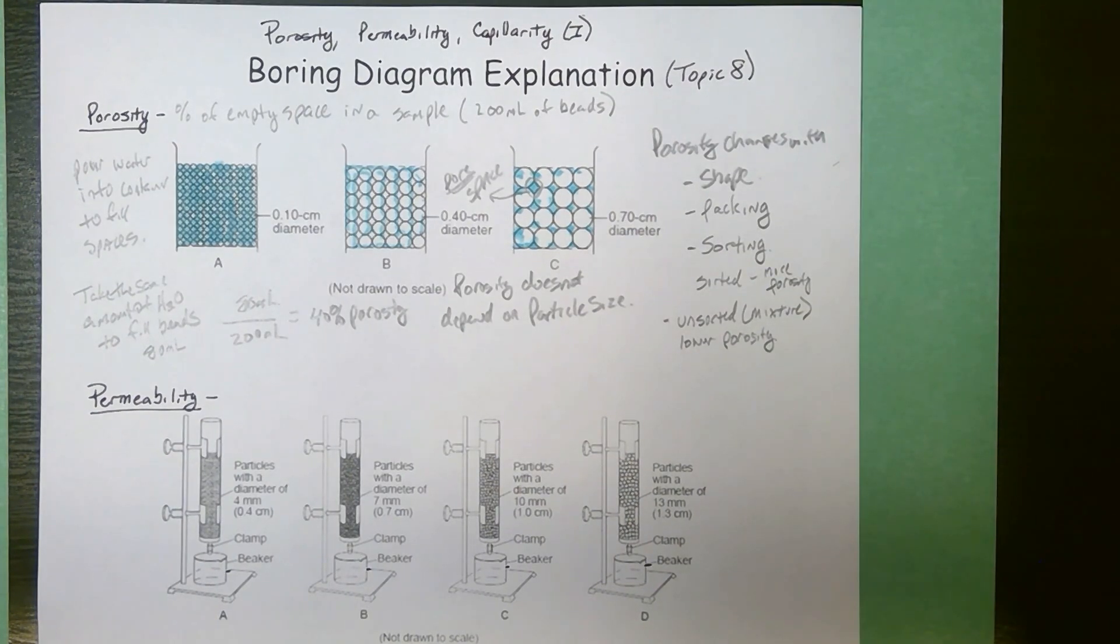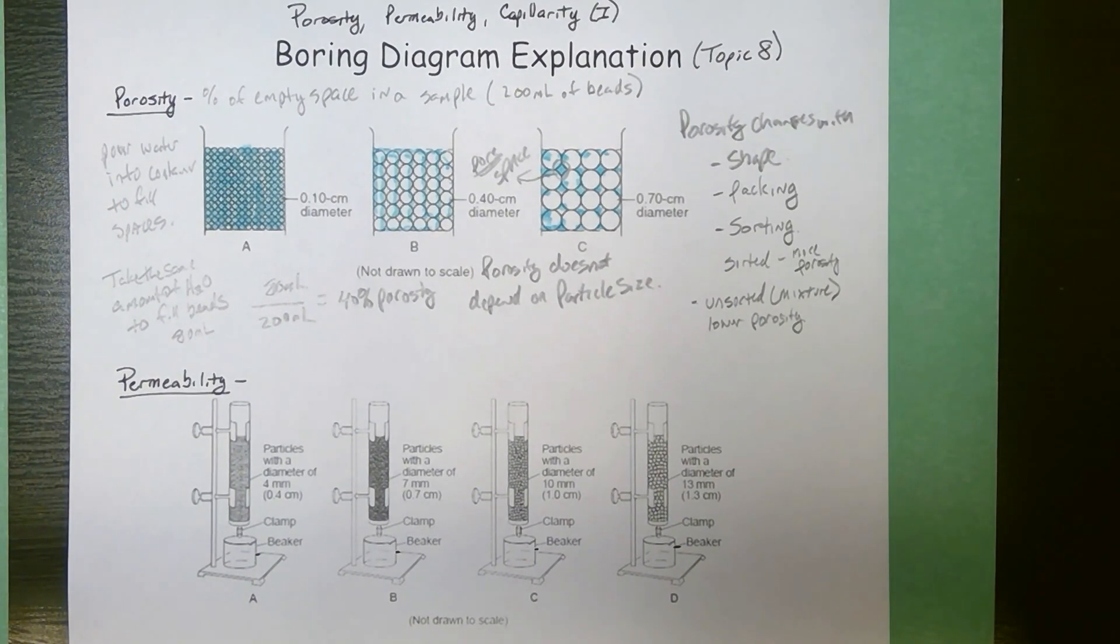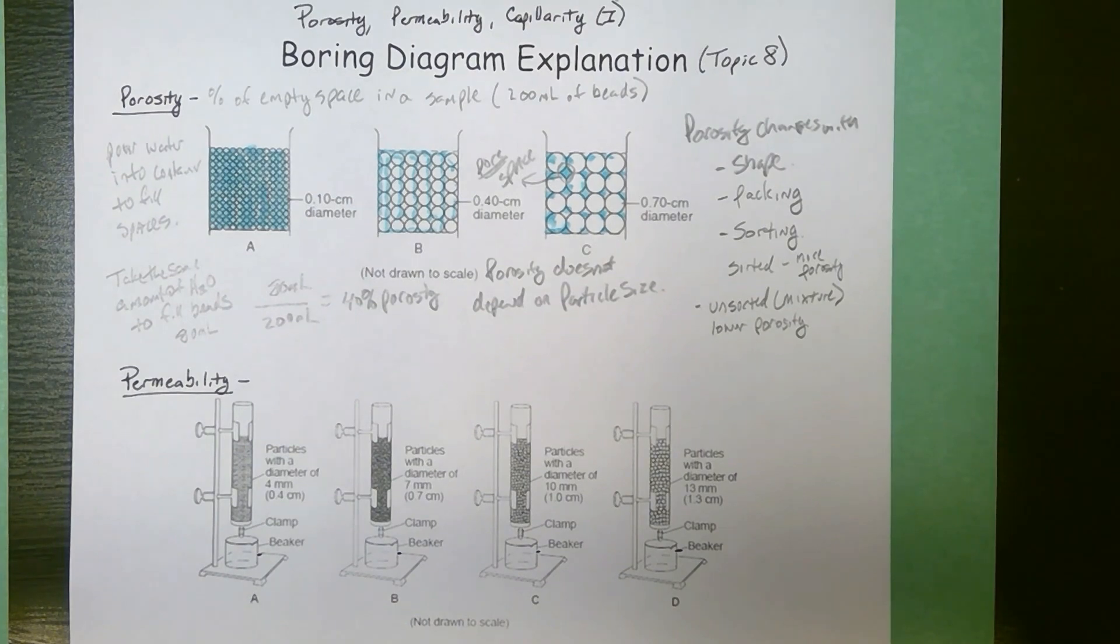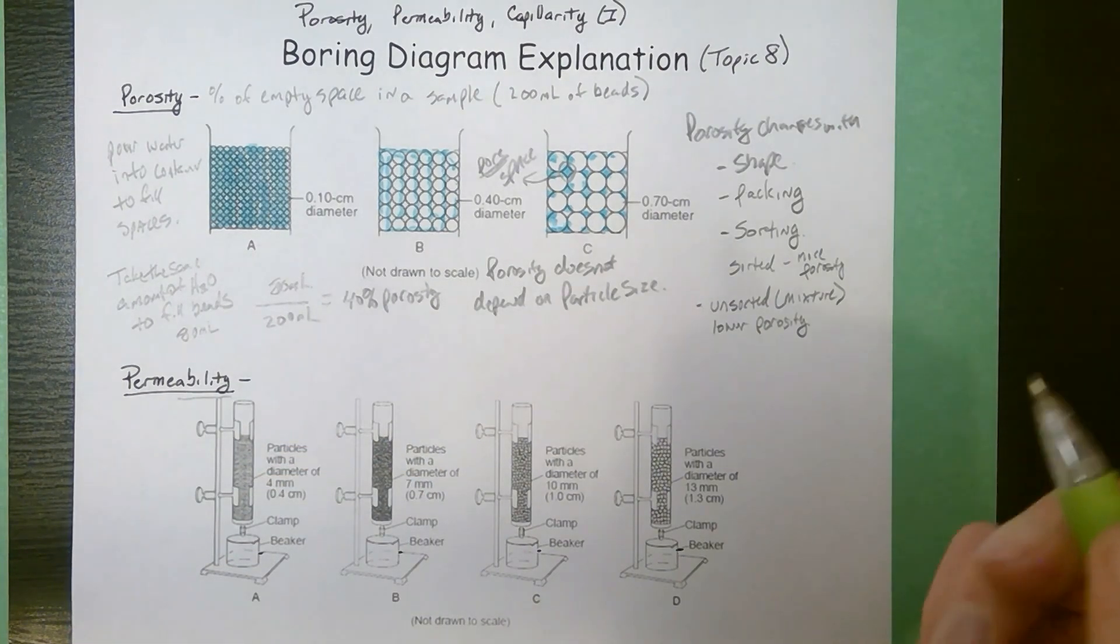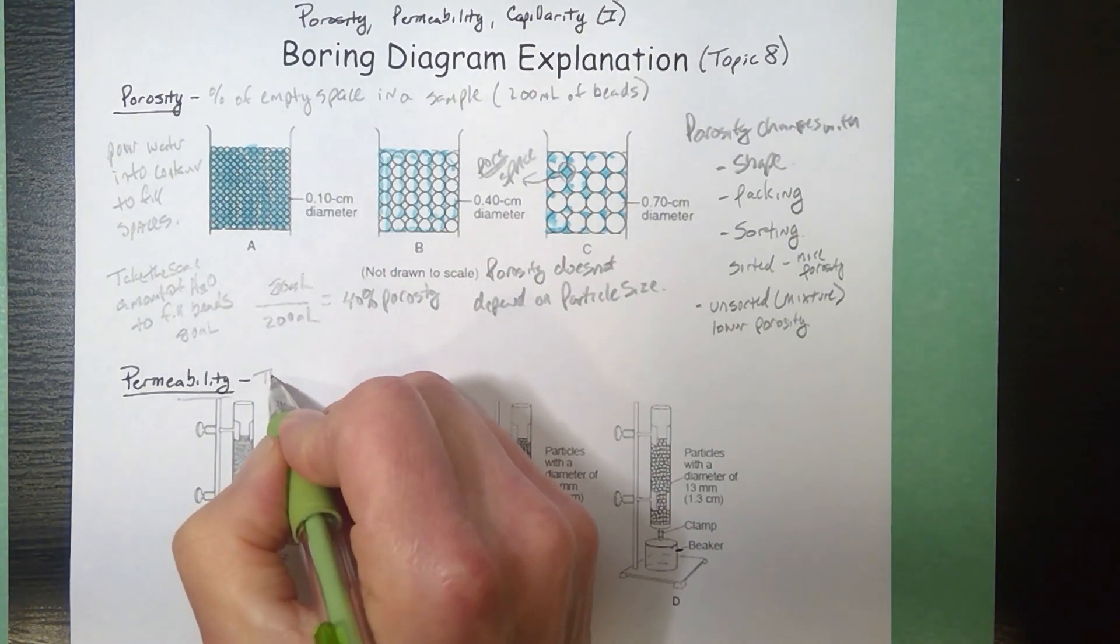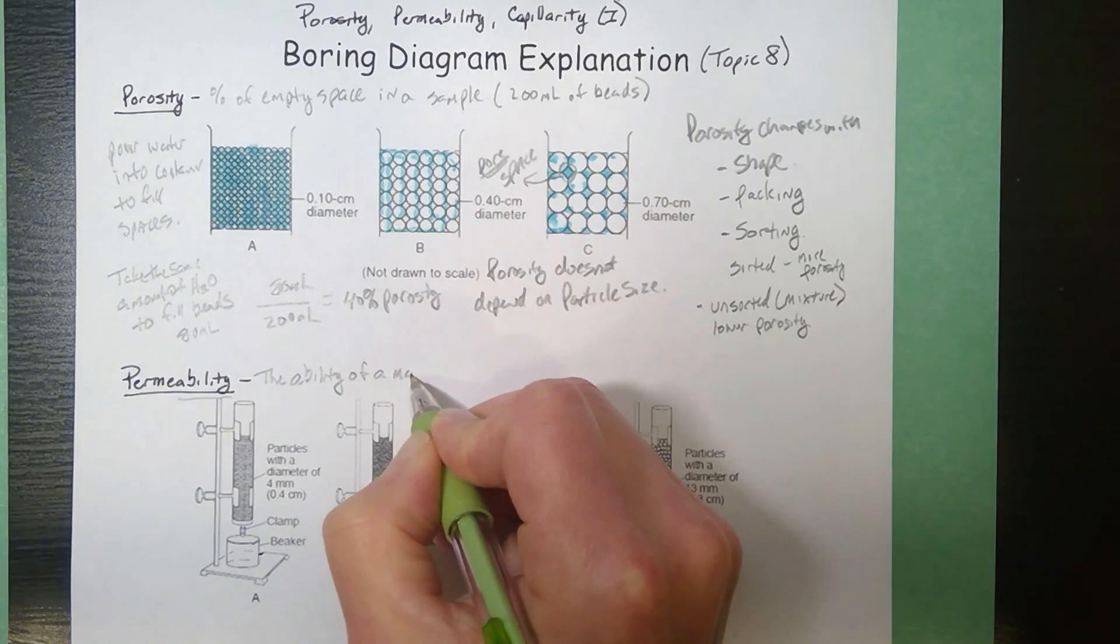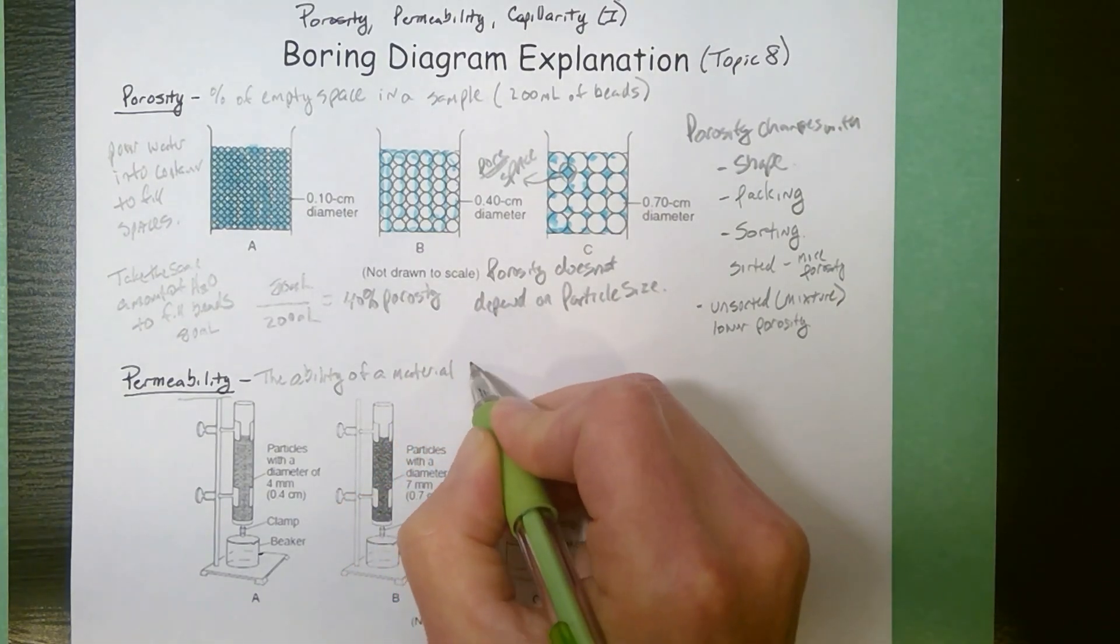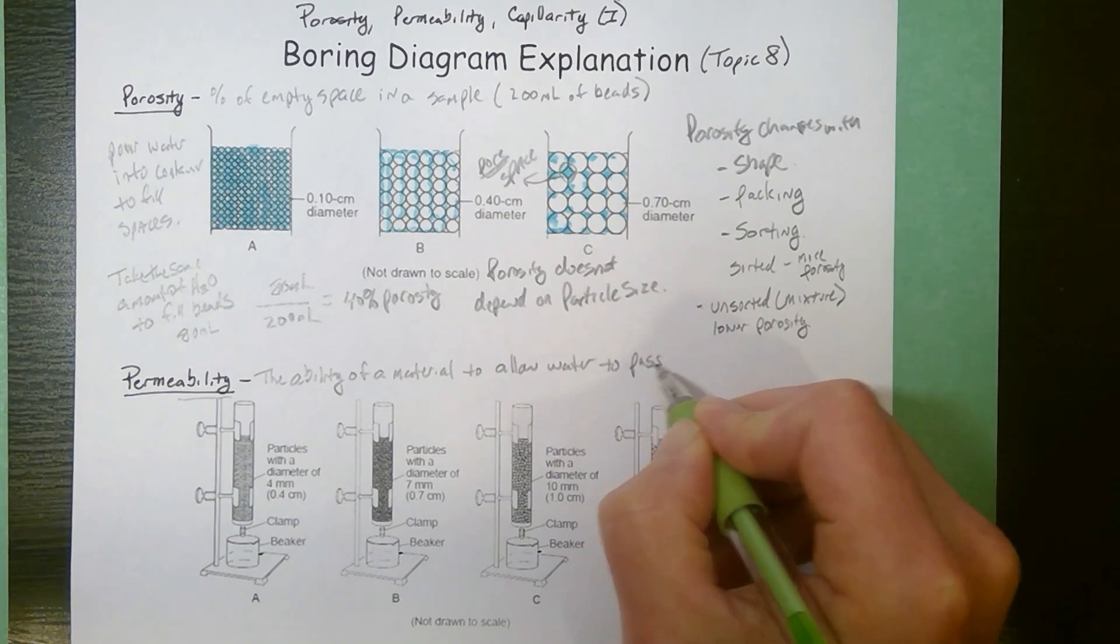Alright, permeability is another factor that we can measure about soils. I like to use the second part of this word, ability in the definition. So if we look at permeability, it describes how well a material allows a fluid or allows water to pass through it. So I'm going to define this as the ability of a material to allow water to pass through.